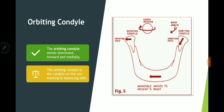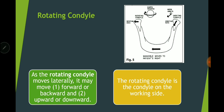To review: the orbiting condyle moves downward, forward, and medially — that is, inward. The orbiting condyle is the condyle on the non-working or balancing side. The rotating condyle moves laterally, meaning outward. It may also move forward or backward, or upward or downward, but essentially it moves laterally or outward.